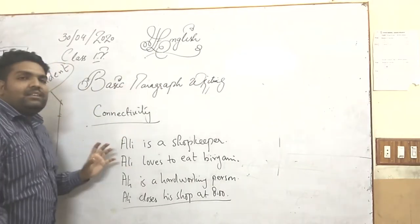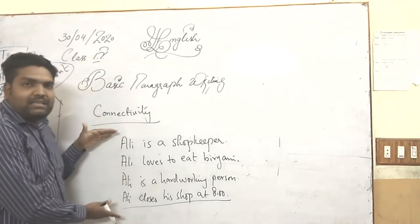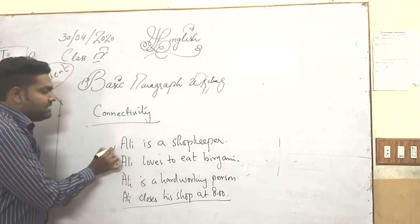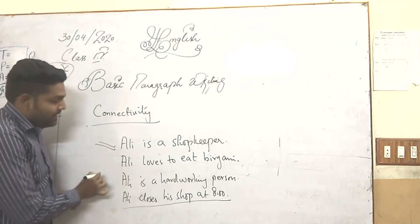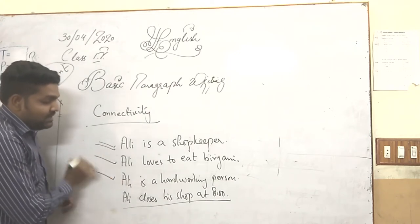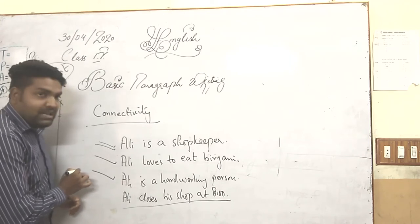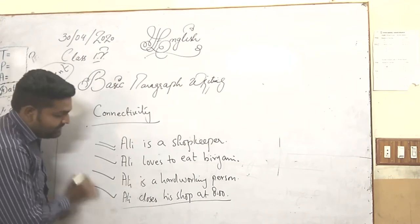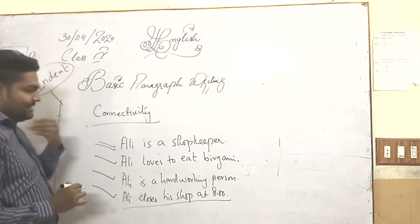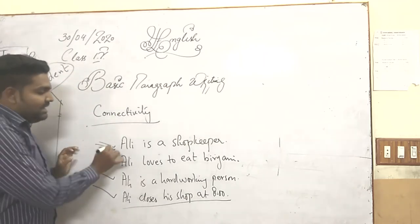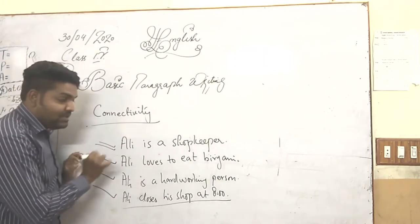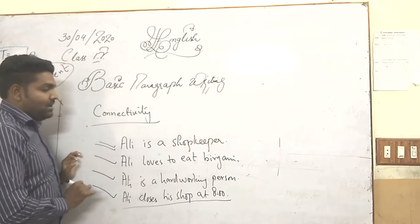So let's see which sentence is not connected or irrelevant among these four sentences. First: Ali is a shopkeeper. Second: Ali loves to eat biryani. Third: Ali is a hard-working person. And fourth: Ali closes his shop at eight. Can you guess which sentence is not related to the other three?